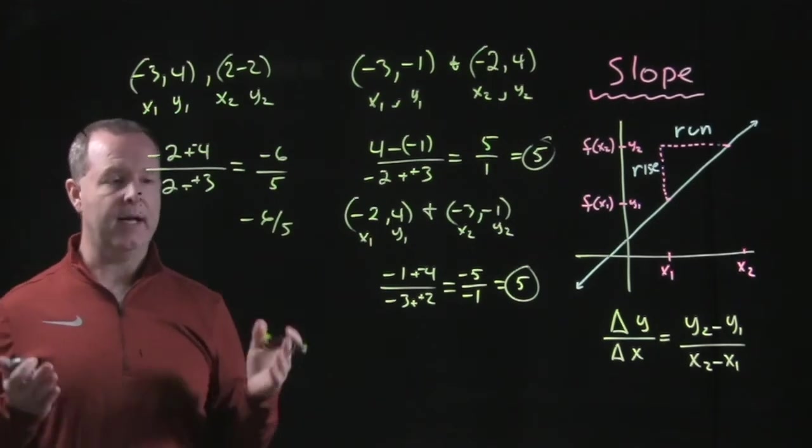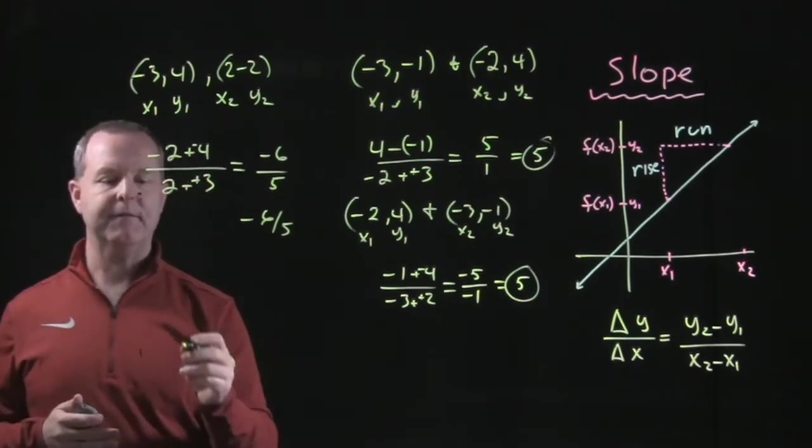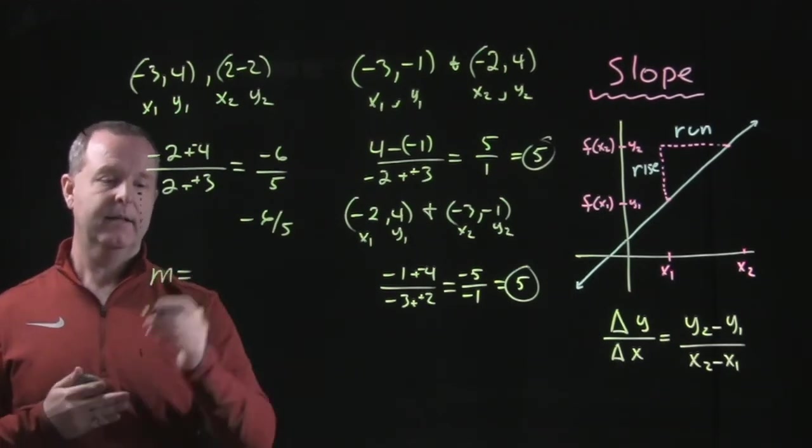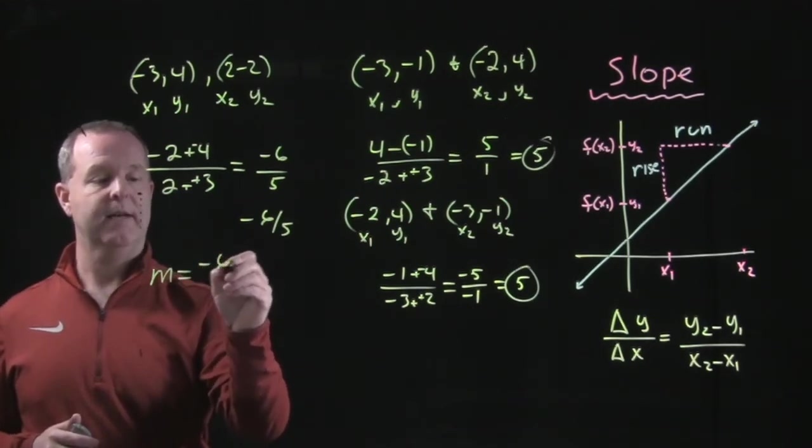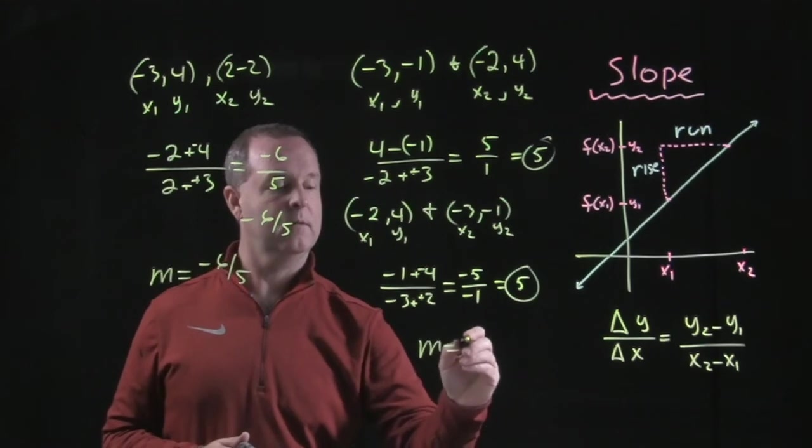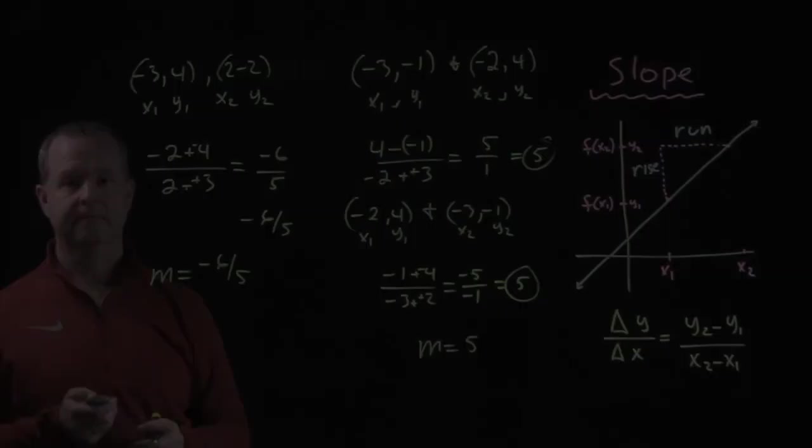Now we're going to use a variable to describe slope. So you can see often that slope is going to be written in shorthand as M. M represents our slope. So in this particular case, our slope was negative 6 fifths. Over here, our slope was 5.